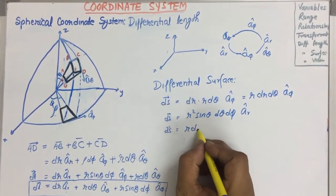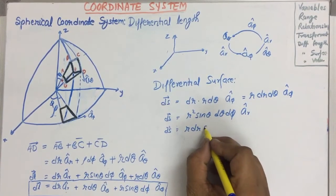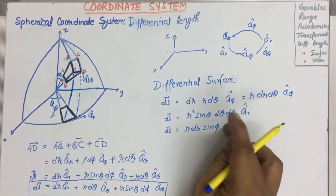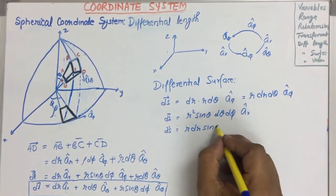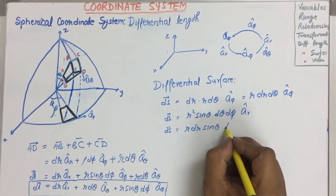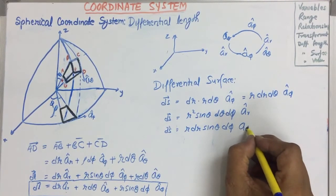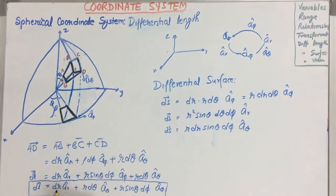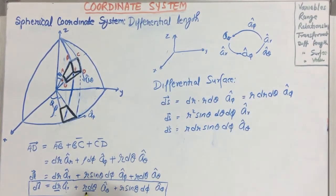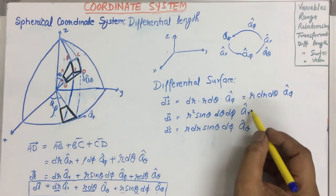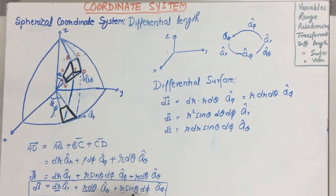The third differential surface will be R·dR·sinθ·dφ·Aθ. Just multiply these two and the cross product of these two. That becomes this one. Multiply these two and the cross product gives the next one. In this way, the three differential surface elements are found.